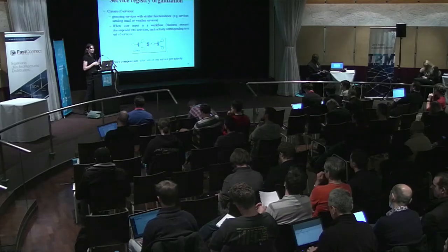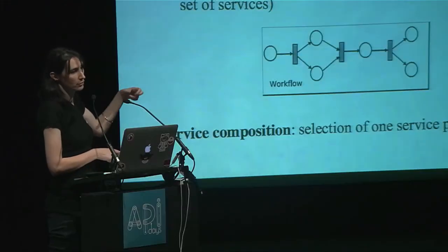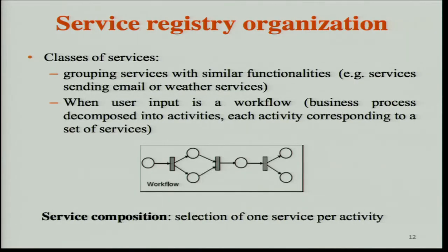We have a specific organization of the service registry depending on how the user asks their query. When using a workflow — a business process decomposed into activities — for each activity we need a class of services with similar functionality. So in this case we organize the service registry by groups of services having similar functionality: a class of weather services, a class of email-sending services, and so on. To compose services in this case means selecting one service per class for each activity.